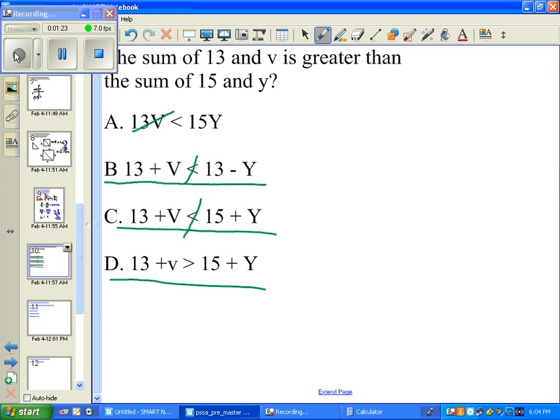We have the sum of 13 and V is greater than the sum of 15 and Y. So that makes letter D our answer.